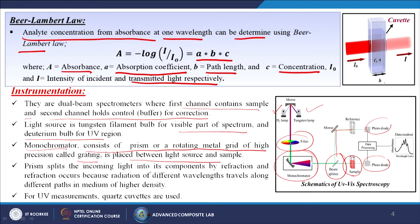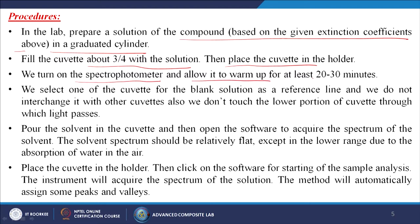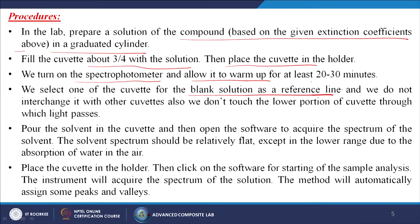A prism splits the incoming light into its components by refraction, which occurs because radiation of different wavelengths travels along different paths in a medium of higher density. For UV measurements, quartz cuvettes are used. In the lab: prepare a solution of the compound based on the given extinction coefficient in a graduated cylinder. Fill the cuvette about three-fourths with the solution, then place the cuvette in the holder. Turn on the spectrophotometer and allow it to warm up for at least 20 to 30 minutes. Select one cuvette for the blank solution as a reference line and do not interchange it with other cuvettes.